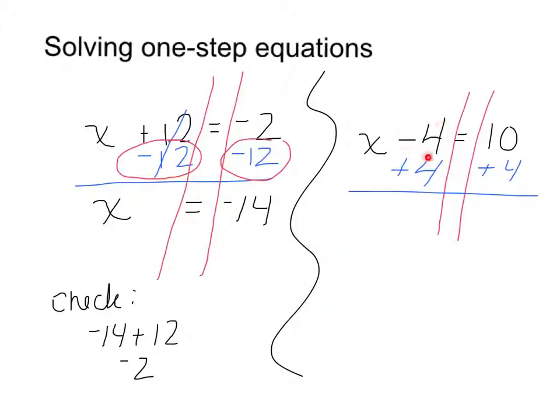Well, having a negative 4, or subtracting 4, and then adding 4, this adds out to 0. So I'm left with x is going to equal what 10 plus 4 is, which is 14.